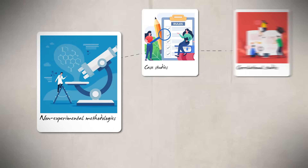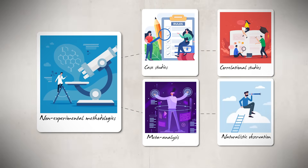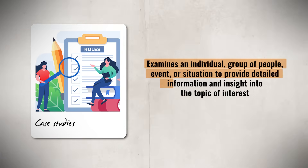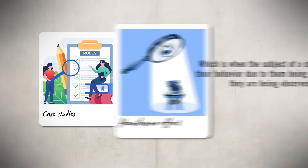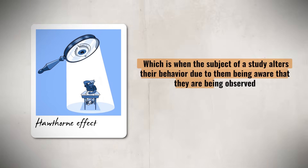Non-experimental methods include case studies, correlational studies, meta-analysis, and naturalistic observation. A case study examines an individual, group of people, event, or situation to provide detailed information and insight into the topic of interest. One problem that can come up with a case study is the Hawthorne effect, which is when the subject alters their behavior due to being aware that they are being observed.